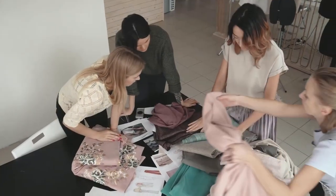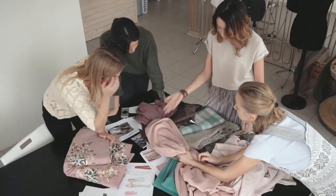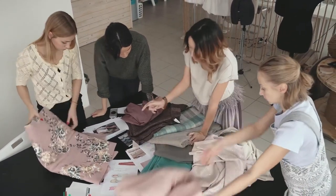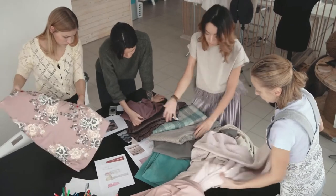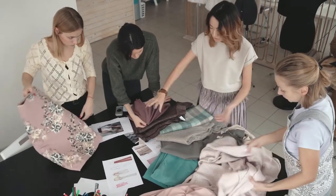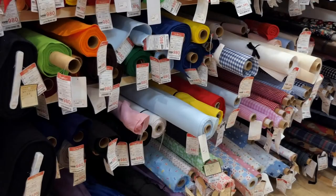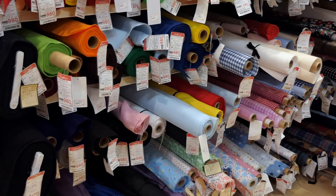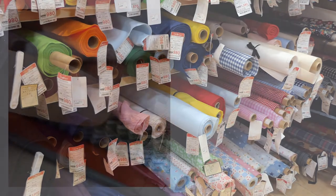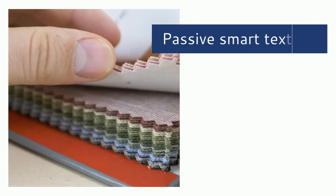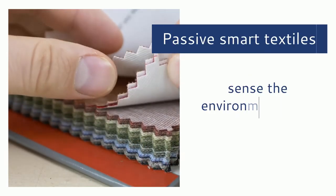Smart textiles might lead to important savings on welfare budgets. They integrate a high level of intelligence and can be divided into three subgroups: passive smart textiles, which are only able to sense the environment or user based on sensors.